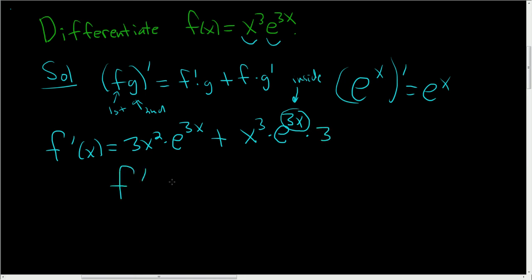The only thing left to do is rewrite the first piece, 3x²e^(3x), and maybe put the 3 in the front, plus 3x³e^(3x). And that's it.